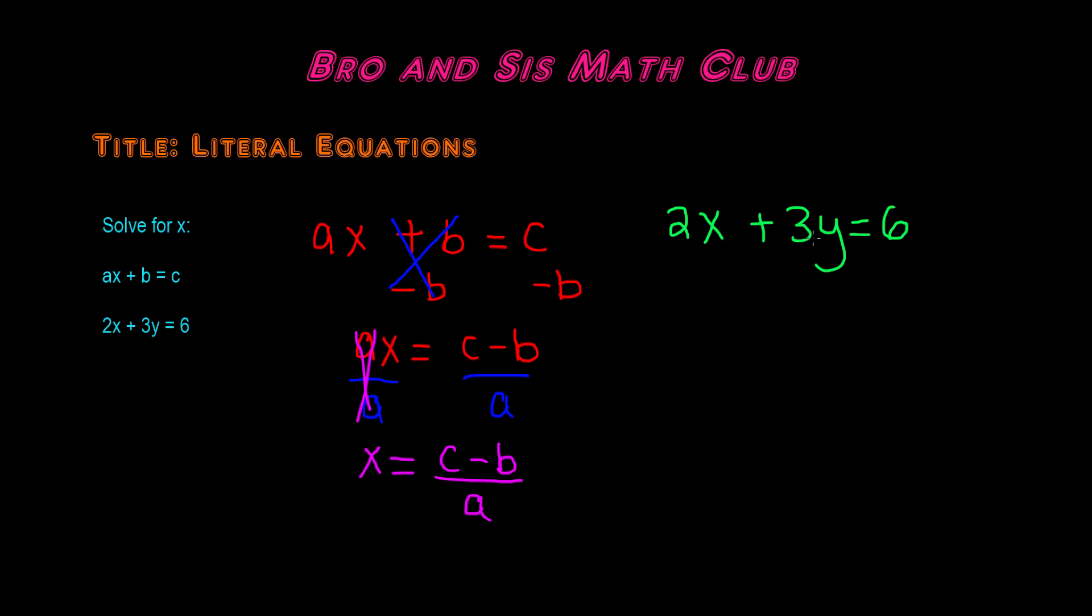So first let's get rid of the 3y. Since it's a plus 3y, let's do minus 3y because the opposite of addition is subtraction. Remember to do the same thing on both sides. So plus and minus cancel each other out and we're left with 2x is equal to 6 minus 3y.